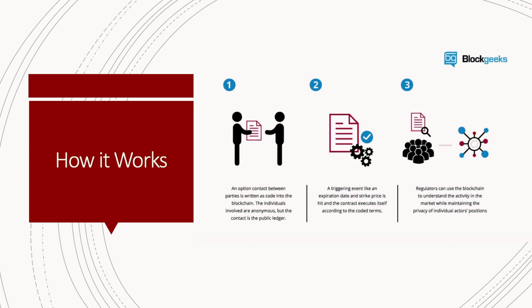There is a contract between parties and it is written in code into the blockchain. The individuals involved in this process are anonymous, but the contract is on the public ledger. On a triggering event — like an expiration date or a hit price — it executes the contract according to the coded terms. Regulators can use the blockchain to understand activity in the market while maintaining the privacy of individual actors' positions. Basically, it's a contract written in code that has a certain event triggering it to run and produce an outcome.